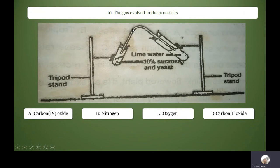What gas evolved in this process? Looking at this diagram, is carbon dioxide. Of course we look at the test tube has 10% sucrose and yeast. Of course you know the yeast cells will act on the sugar, that is sucrose, and in the process carbon dioxide is released. So you know the importance of the lime water here is to detect that it is carbon dioxide. Carbon dioxide turns lime water milky.